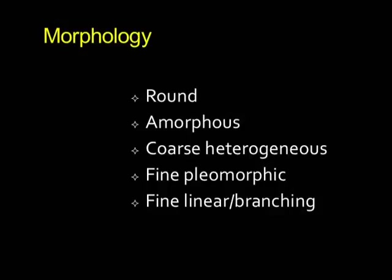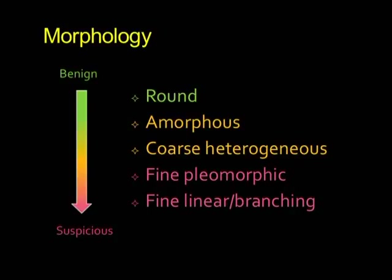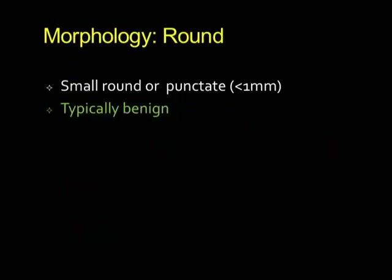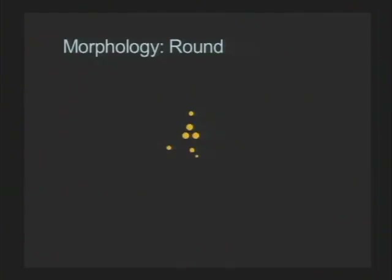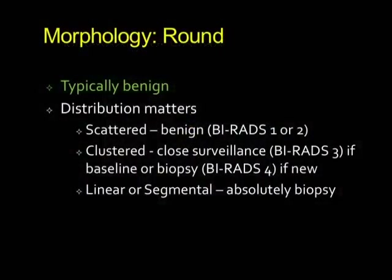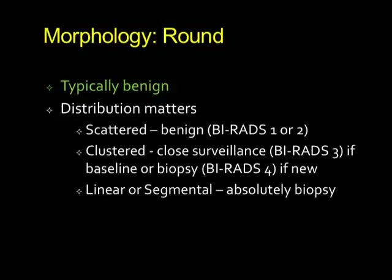There are five morphology terms, ordered from benign to most suspicious: round, amorphous, coarse heterogeneous, fine pleomorphic, and fine linear branching. Round calcifications are small, round, or punctate and are usually benign. Distribution matters — if scattered, they're BIRADS 1 or 2. If clustered and new on a baseline, you can give BIRADS 3 for close surveillance. If new, you need to biopsy. If in a linear or segmental distribution, you would absolutely biopsy them because distribution trumps morphology.